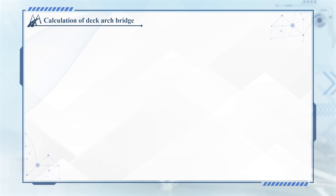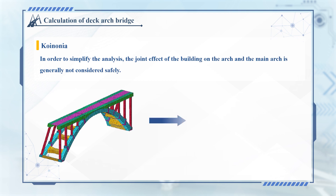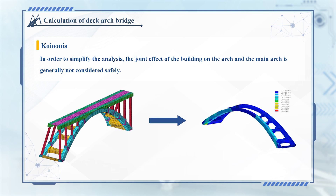Calculation of Deck Arch bridges. The calculation of ordinary deck arch bridges, which are multiple statistically indeterminate space structures. In fact, there is joint action of the building on the arch and the main arch, but in order to simplify the analysis, it is generally safe not to consider it.